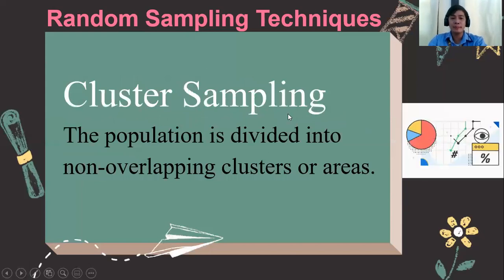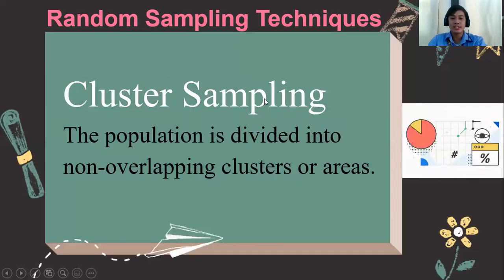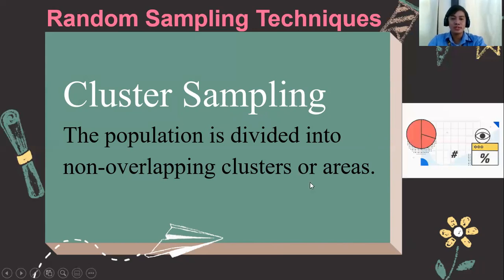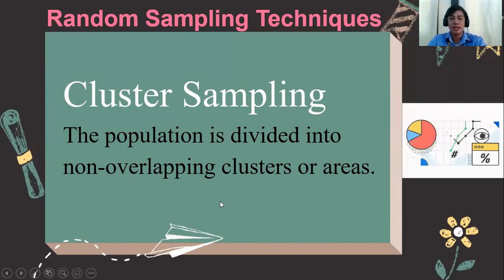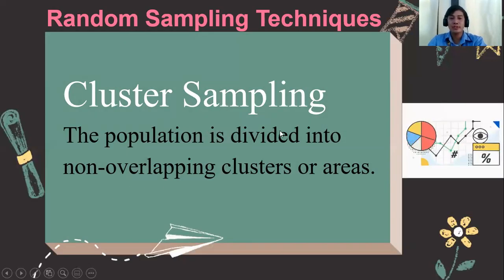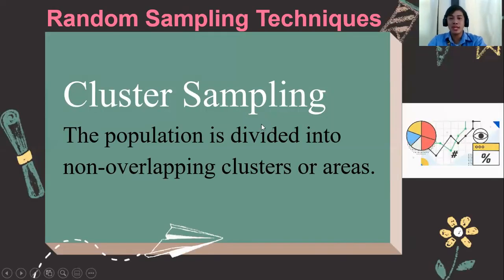For cluster sampling, you select only one strata — you select the cluster in which all the subgroups are included. For example, if your population are the STEM students, you can select just one section because every STEM section is considered one cluster. Say you have chosen STEM 8 as your sample — you perform cluster sampling, meaning all the STEM 8 students will be representing the entire STEM strand.